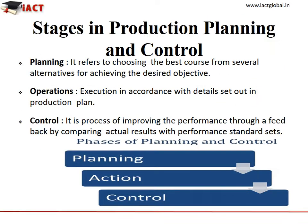The stages in Production Planning and Control are: 1. Planning — choosing the best course from several alternatives for achieving the desired objective. 2. Operations — execution in accordance with details set out in the production plan. 3. Control — a process of improving performance through feedback by comparing actual results with performance standards.